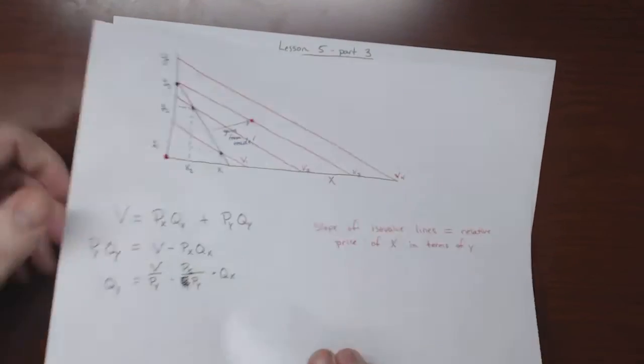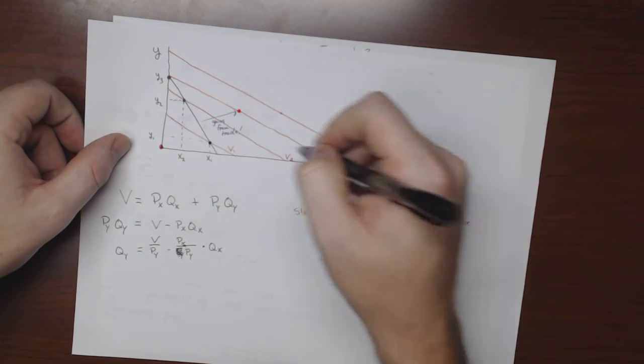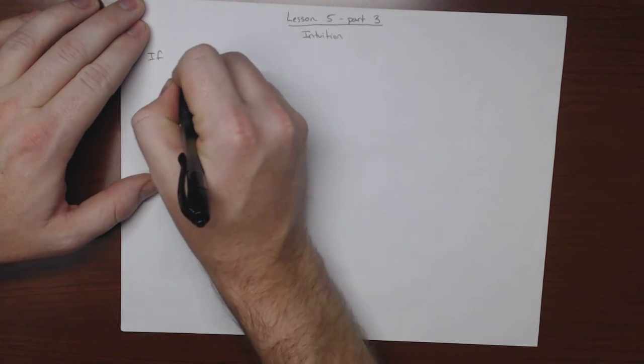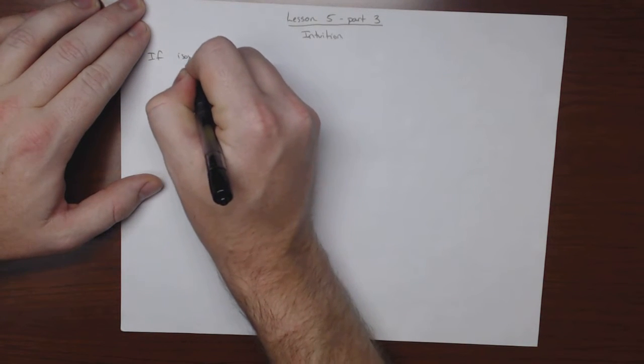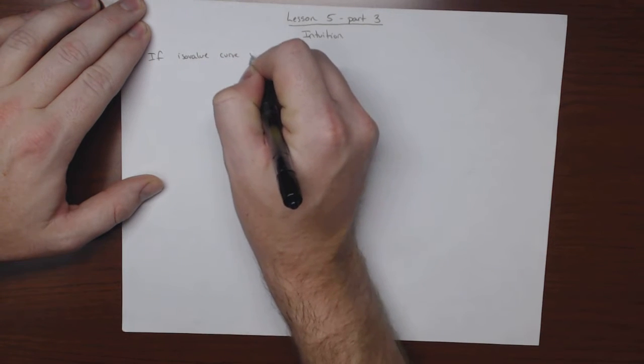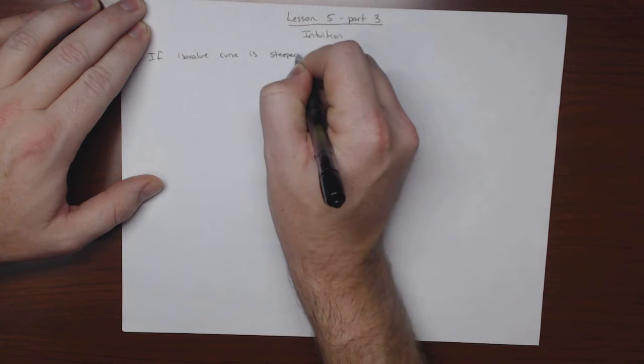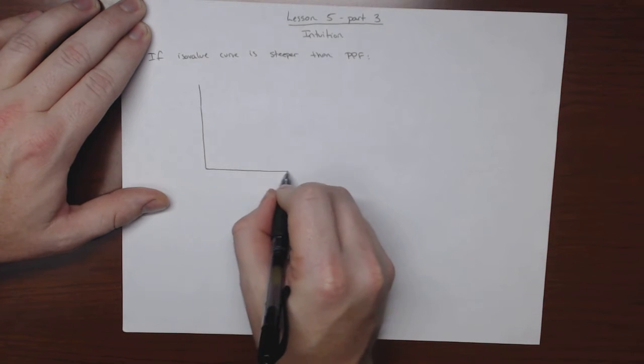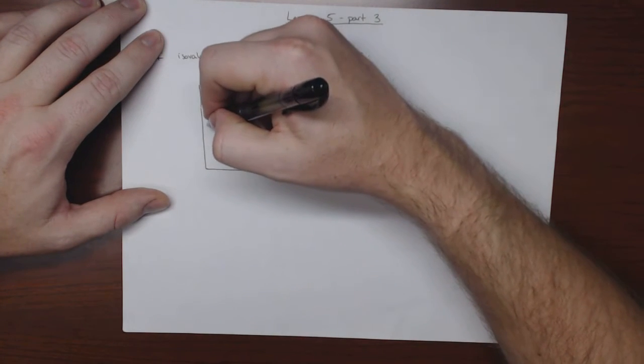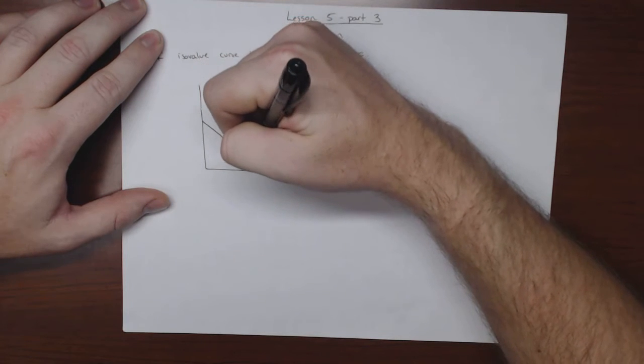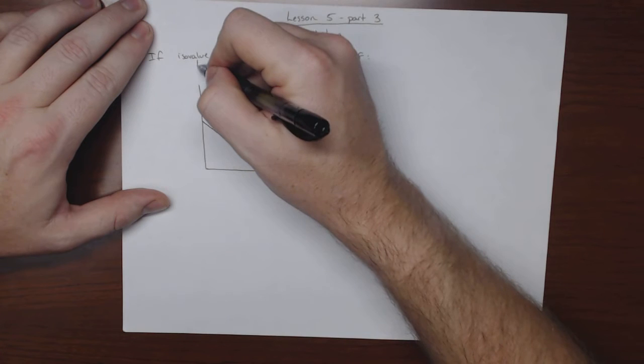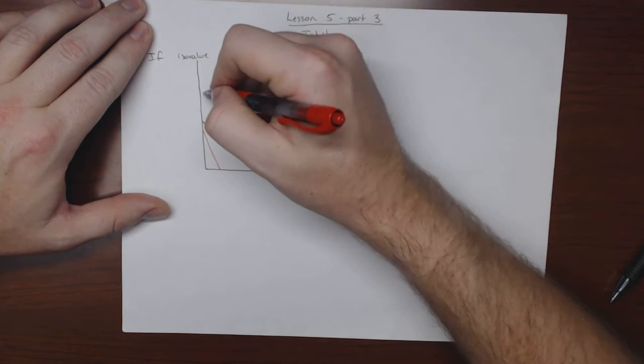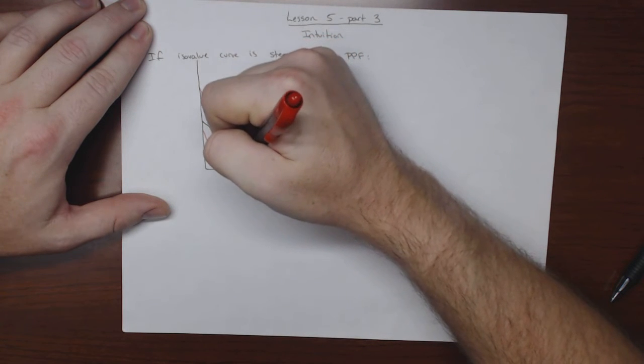Now if the slope of the PPF curve was less steep than the iso value curve, so let's draw that. Or conversely we could say if iso value curve is steeper than PPF, what we would have would be something like this. So let's say we had our PPF, and this is going to end up being a mess, but that's okay. Our iso value lines are steeper.